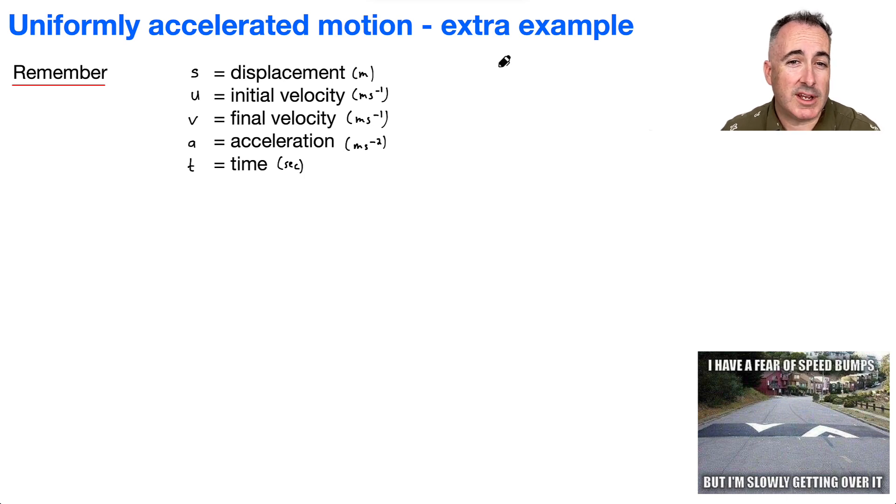We have these four equations of motion that we need to know. You don't have to memorize them, they're on your data booklet. S equals U plus V over 2 times T. We've also got V equals U plus AT. We've got S equals UT plus half AT squared. And finally, we have V squared equals U squared plus 2AS.